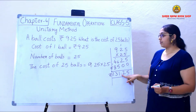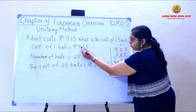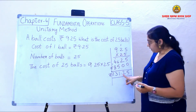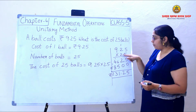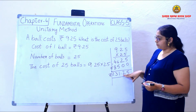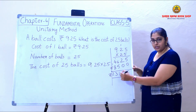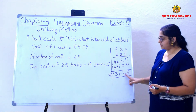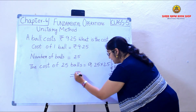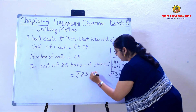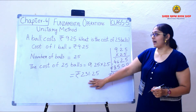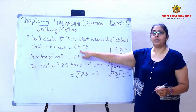Why do I place the decimal point here? Because the original number 9.25 has 2 digits after the decimal. So in the answer, I count 2 digits from the ones place and place the decimal there. So the cost of 25 balls is Rs. 231.25, when each ball costs Rs. 9.25.